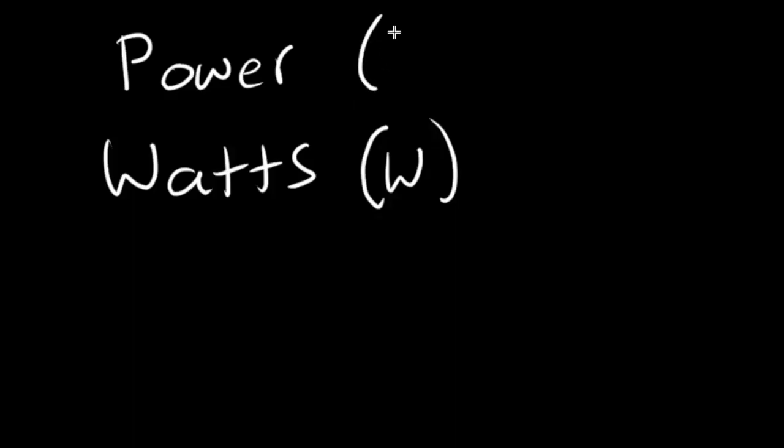So power is essentially the rate of energy usage. We'll keep it simple. Power is the rate of work being done, or like I said, the rate of energy usage. We'll keep it that simple right now. But what about wattage or watts? Watts is simply a unit of measure of power. So watts is just a unit to measure power up here. And watts is often symbolized by the letter W. While power is often symbolized by the letter P.